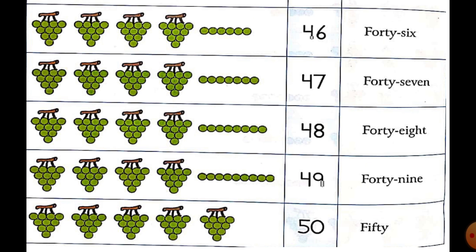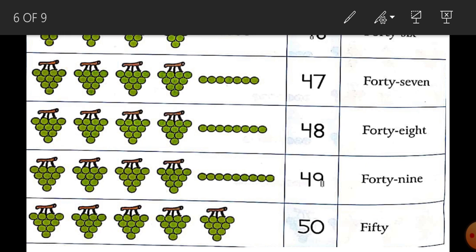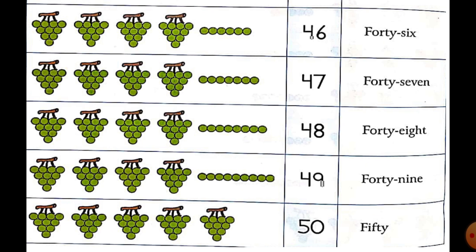So next, four groups and six extra — forty-six. How many is that? Forty-six. Four groups of grapes, six extra — forty-six. Forty-six.